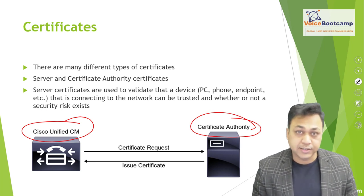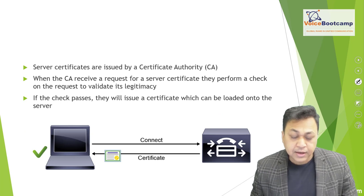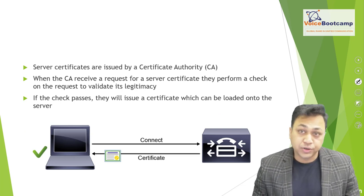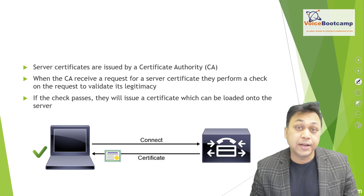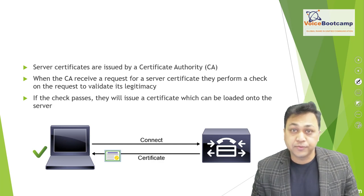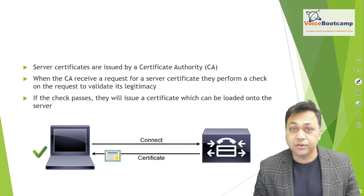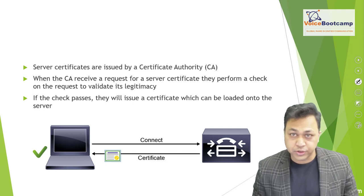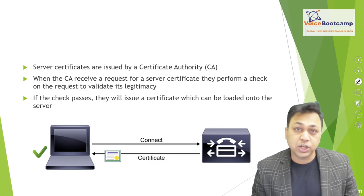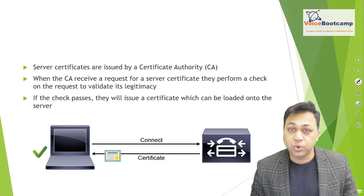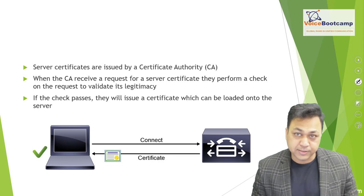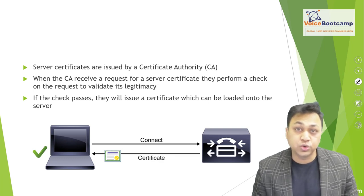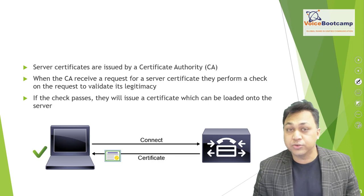Whenever you're trying to communicate with the Call Manager, it will validate the certificate by asking you to send your certificate. You then validate that with the certificate authority to ensure that all the identities are accurate. When a CA root server receives a request for a server certificate, it performs a check on the request to validate its legitimacy. If the check passes, it will issue a certificate which can be loaded onto the server.